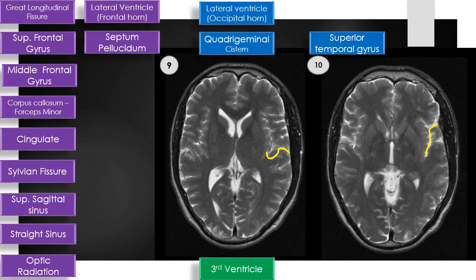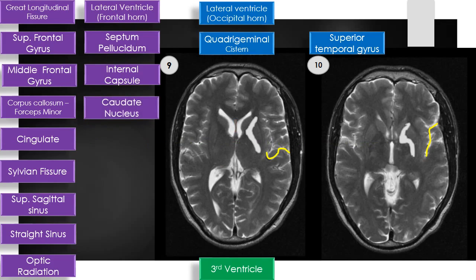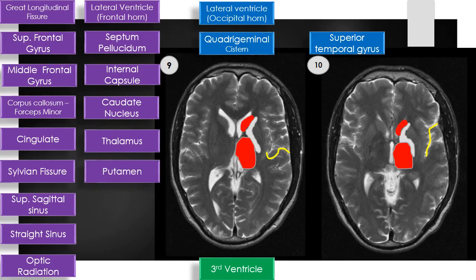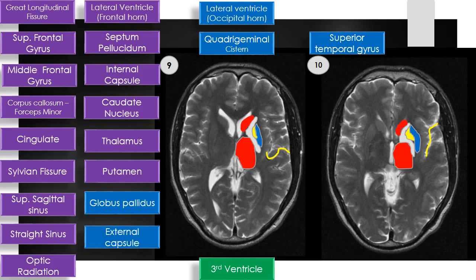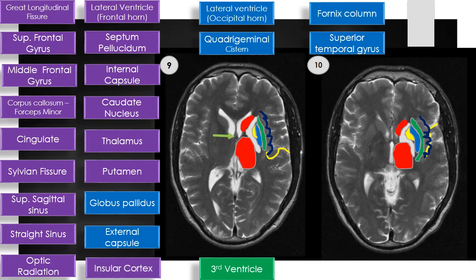Further structures include the septum pellucidum, internal capsule, caudate nucleus located medial to the anterior limb of the internal capsule, thalamus located medial to the posterior limb of the internal capsule, putamen located lateral to the internal capsule, globus pallidus located medial to the putamen, and the external capsule located lateral to the putamen, with the insular cortex located far more laterally.